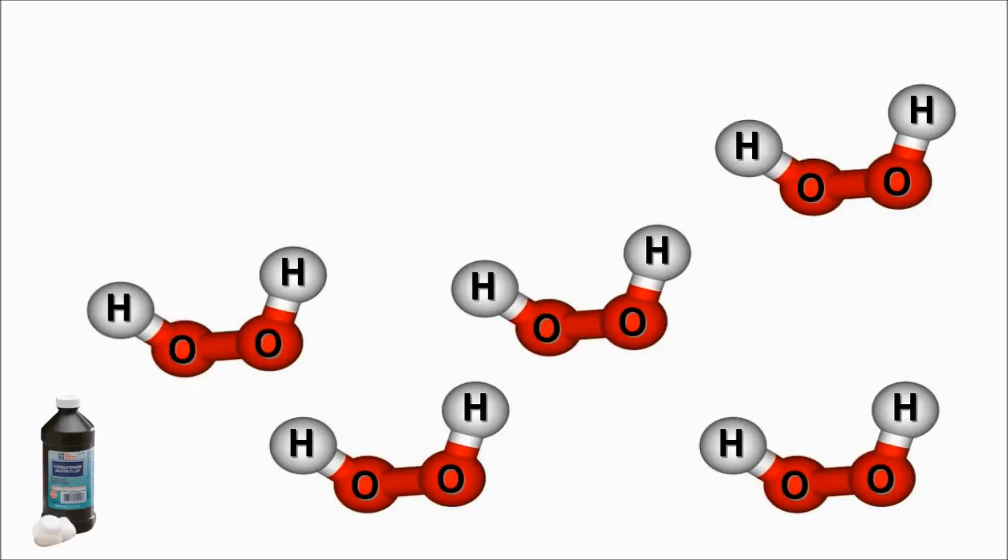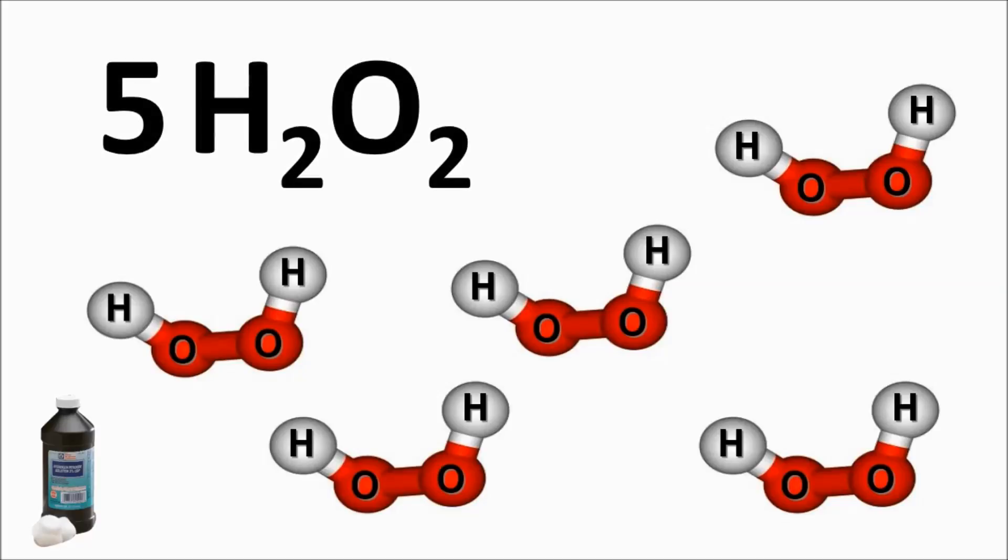What's the chemical formula for these hydrogen peroxide molecules? There are one, two, three, four, five molecules. So, the coefficient would be five. If you said 5H2O2, you're right. Ding hao.